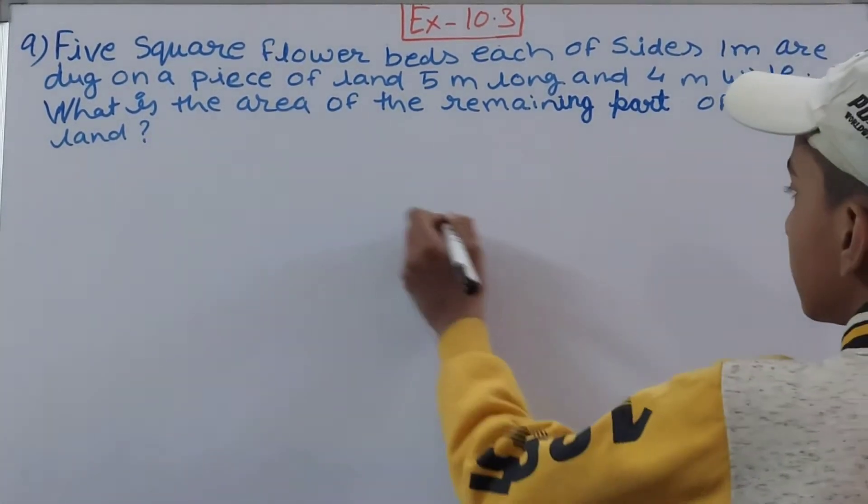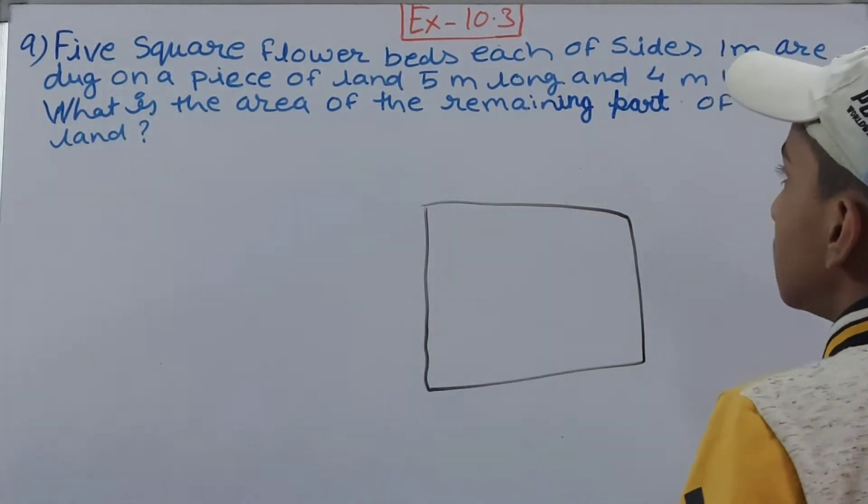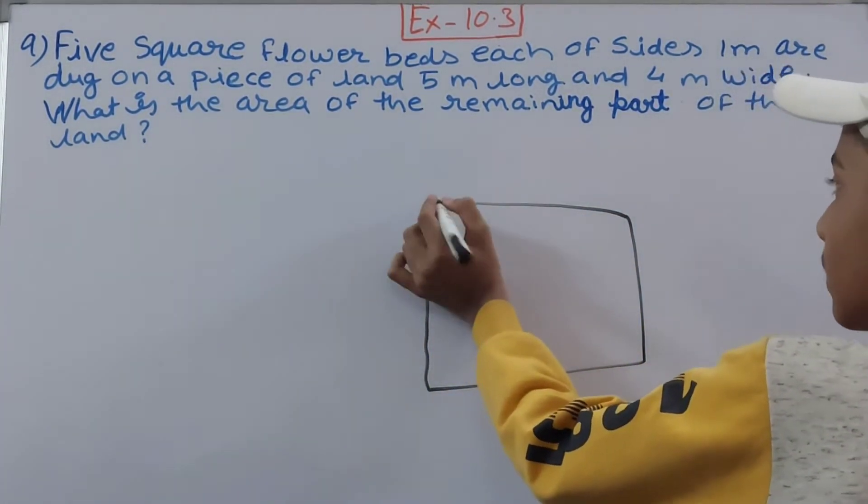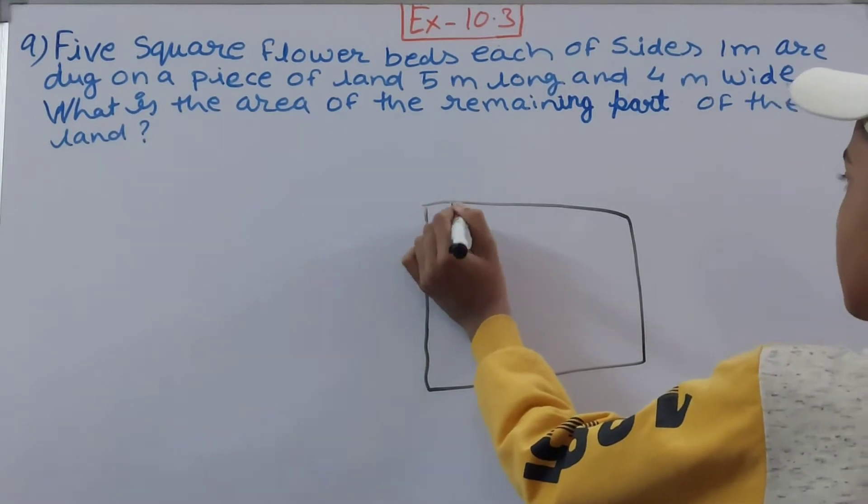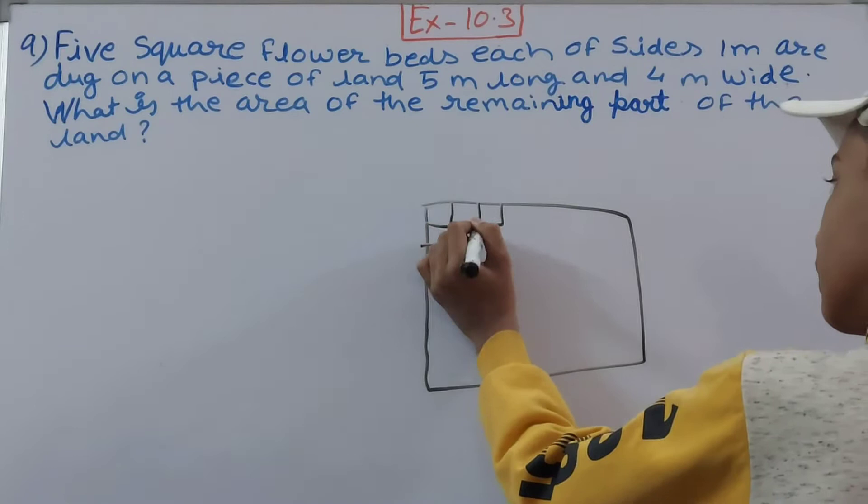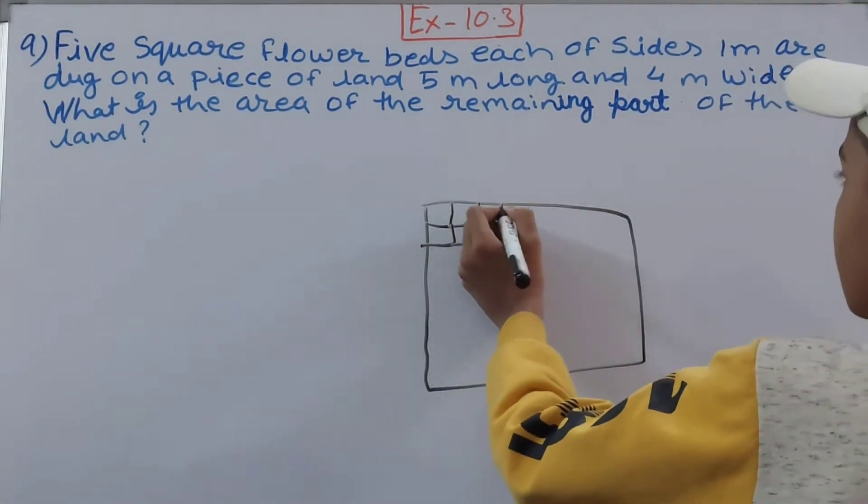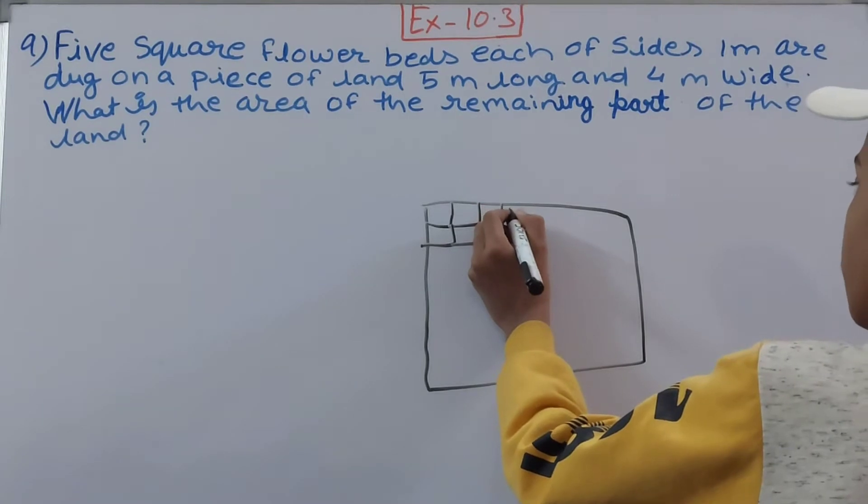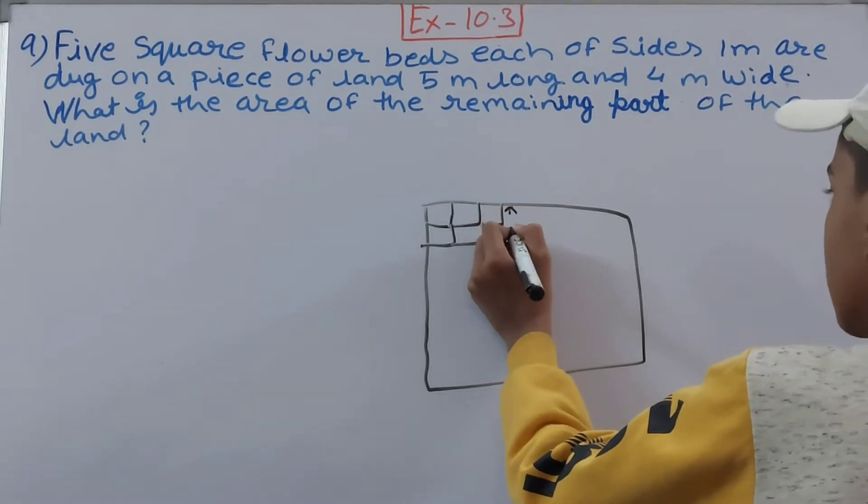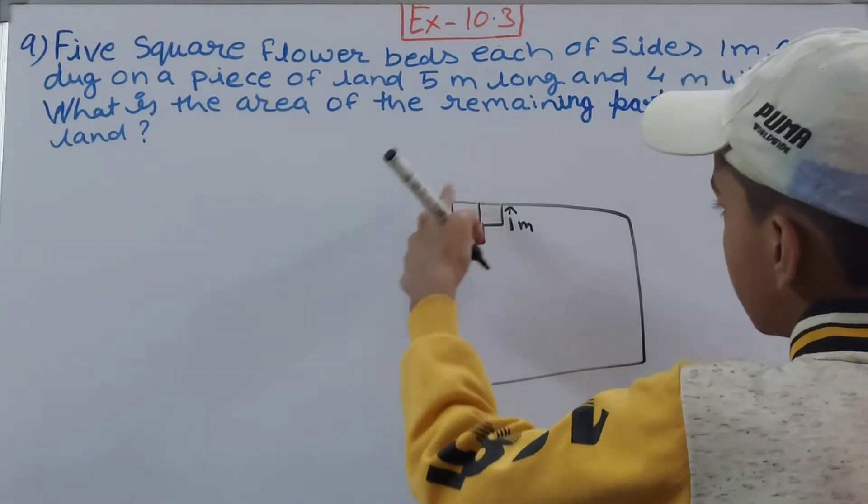Now you are having a land. Just think this is your land, and on this land there are five square flower beds which are being dug out like this. Now, each of these flower beds has a side of 1 meter.